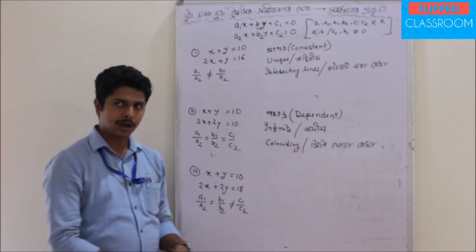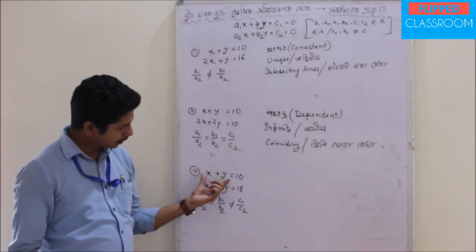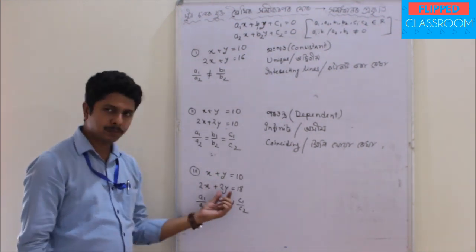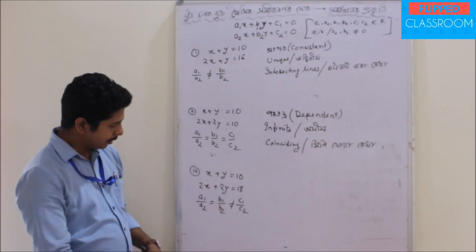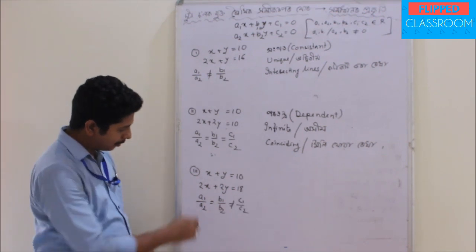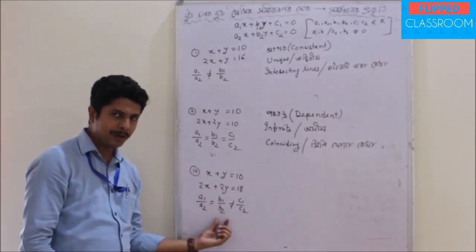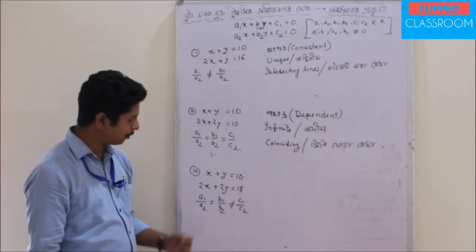The third situation is: x plus y equal to 10, and twice x plus y equal to 18. Then we compare a1 by a2, b1 by b2, and c1 by c2.